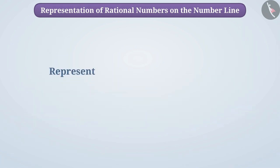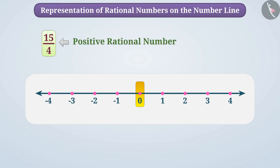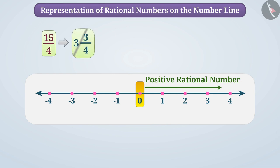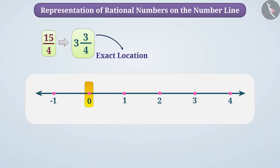Now, will you be able to represent 15 by 4 on the number line? Pause the video and try it. 15 by 4 is a positive rational number, so it is to the right of 0. We can write 15 by 4 as 3 and 3 by 4. This shows us that this rational number is between 3 and 4. To find the exact location, we will divide the unit distance between 3 and 4 into 4 equal parts. We will then show the number 15 by 4 by taking 3 whole and 3 parts of 1 by 4th distance.